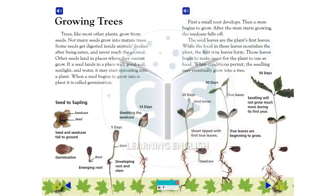Growing Trees: Trees, like most other plants, grow from seeds. Not many seeds grow into mature trees. Some seeds get digested inside animals' bodies after being eaten, and never reach the ground. Other seeds land in places where they cannot grow.